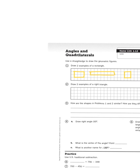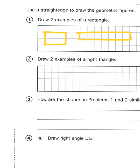So let's take a look at problem number two. It says, draw two examples of a right triangle. So again, I want to create a triangle that has at least one right angle. That's where the name right triangle comes from. It's got a right angle.